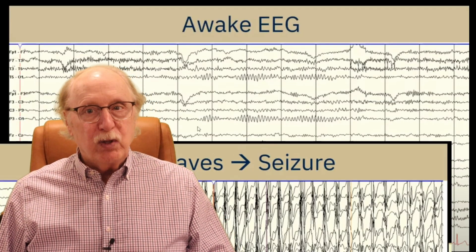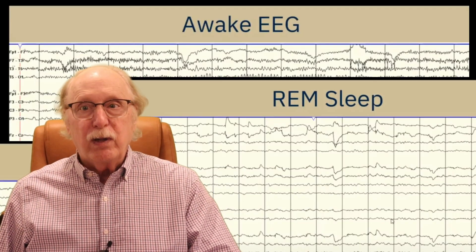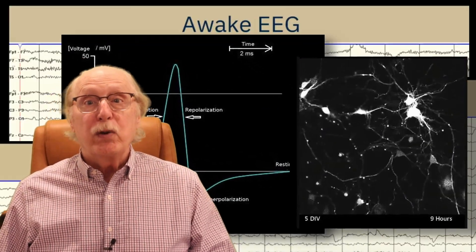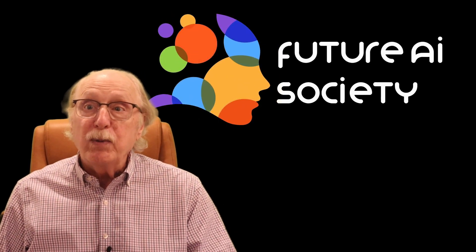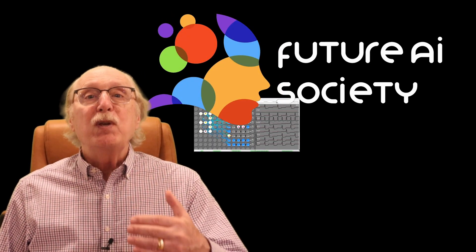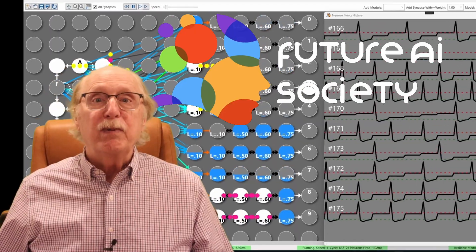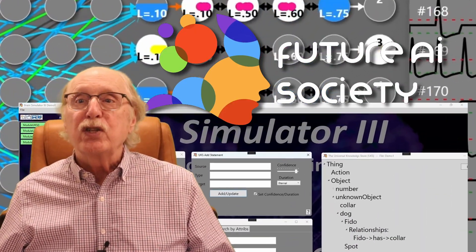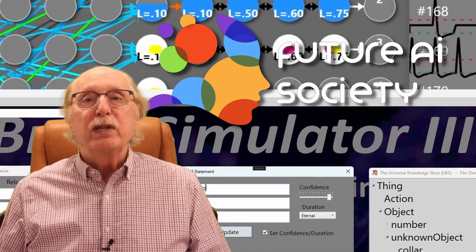I'm Charles Simon, long-time AI researcher, software developer, and manager. Beyond AI, I've developed software for neurological test instruments and neural simulators. I created the Future AI Society to explore how neuroscience can inform smarter, more human-like AI, and I'm using our open-source brain simulator projects for simulations and demonstrations throughout this video series.